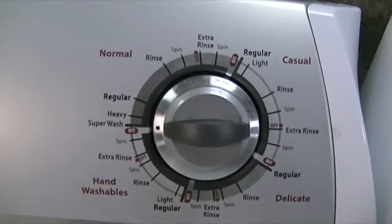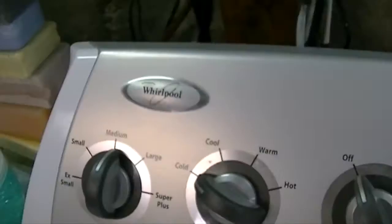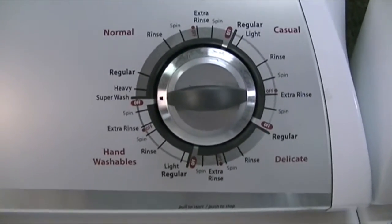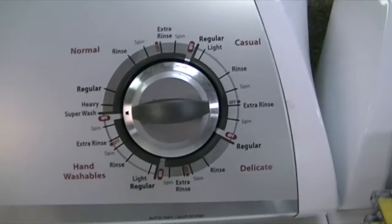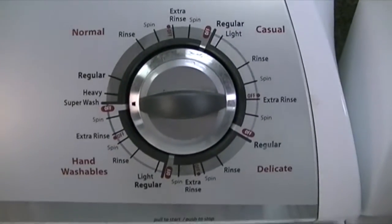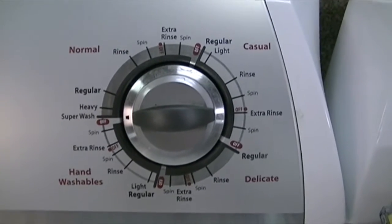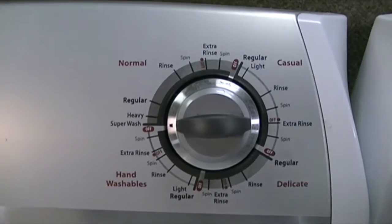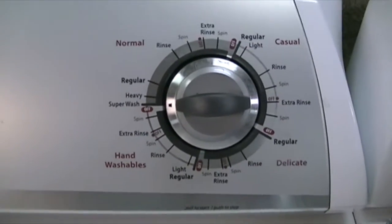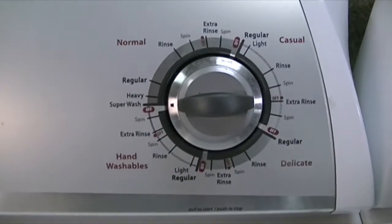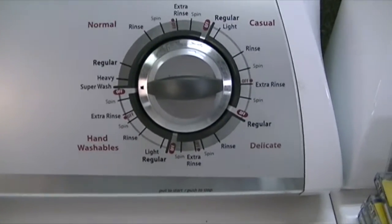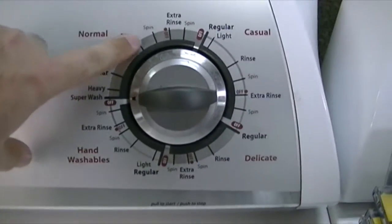But as you guys know, these machines, Whirlpool direct drive, they're supposed to do a neutral drain, which means that the tub does not spin when the water is draining out of the tub. The way that actually works is the machine has to agitate for a certain number of strokes in order for the transmission to reset for a neutral drain, which means it's all mechanical.